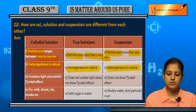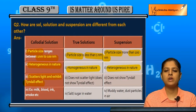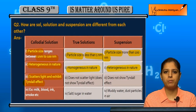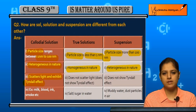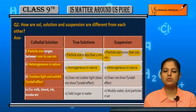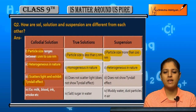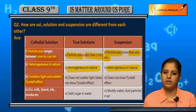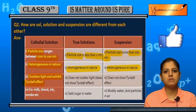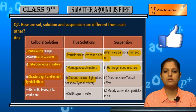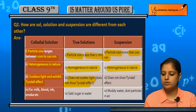Colloidal solutions scatter light and exhibit the Tyndall effect, because their particle size is appropriate — when light is passed through them, it gets scattered. So a colloidal solution exhibits the Tyndall effect and scattering of light is possible. But true solutions, because their particle size is very small, do not scatter light and do not show the Tyndall effect.